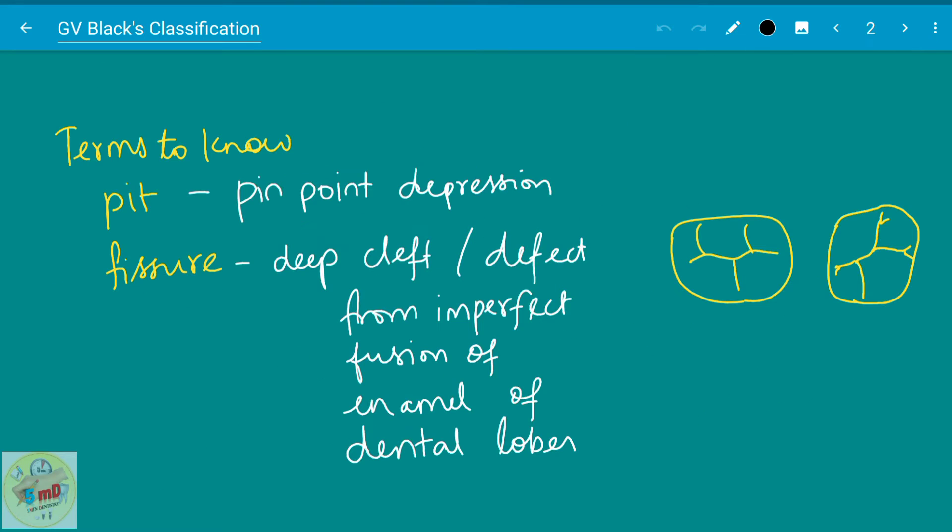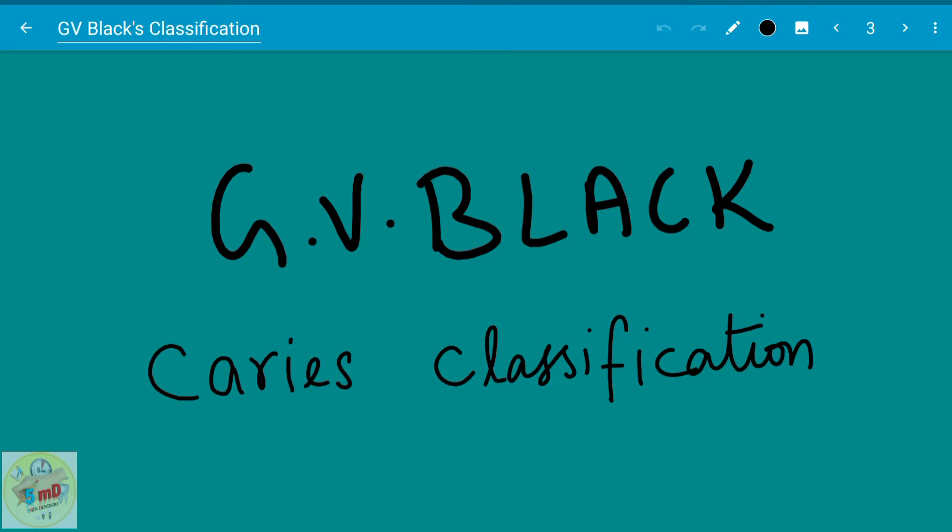You should also know these two terms: pit and fissure. Pits are all pinpoint depressions, as you could see here, and fissures are all deep clefts and defects from imperfect fusion of enamel of dental lobules. While developmental grooves, when there are improper fusion, these fissures are formed and these are seen in occlusal aspect of the posterior teeth and lingual aspect of the anterior teeth.